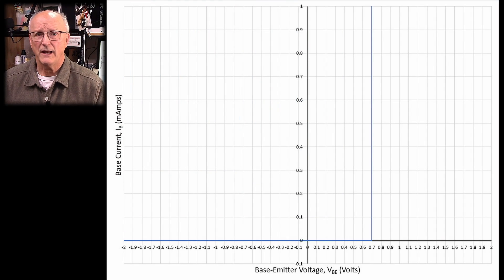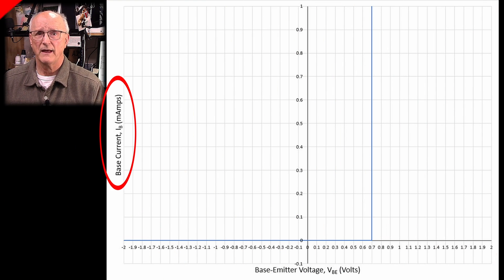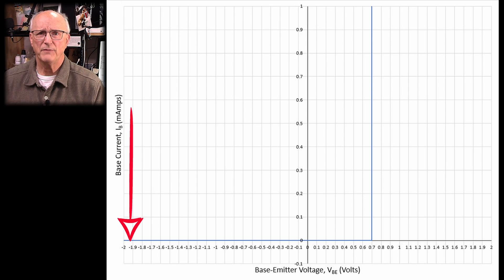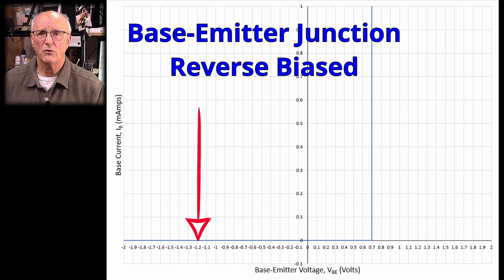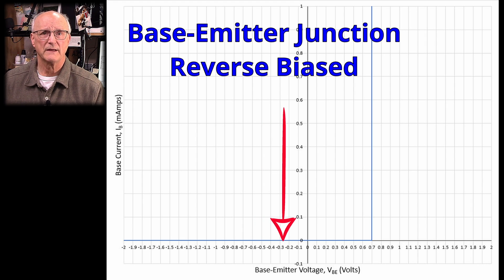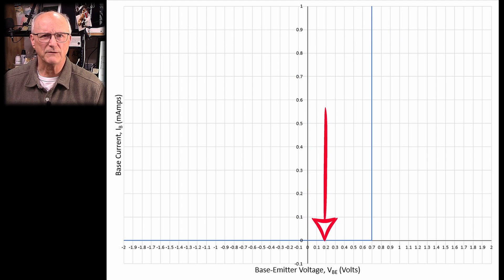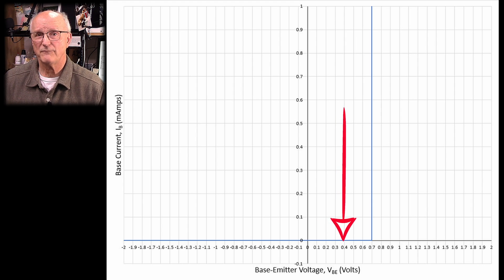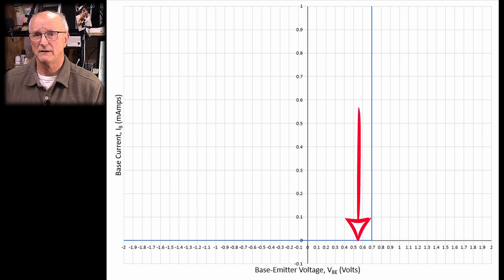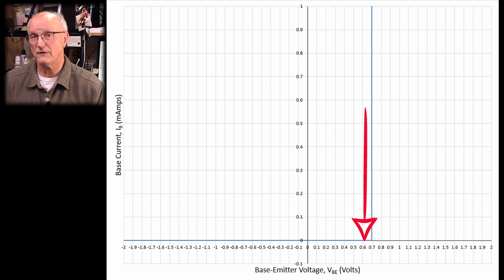Here is a plot for an NPN transistor used for this model. It has the base current on the vertical axis and the base-emitter voltage on the horizontal axis. Starting from the left, the base-emitter junction is reverse biased — there is no current flowing into the base and therefore no collector current. As we pass a base-emitter voltage of zero volts and move into the positive region, there is still not a sufficient base-emitter voltage to offset the effects of the space-charge region of the base-emitter PN junction, so there is still no current flow into the base or collector.